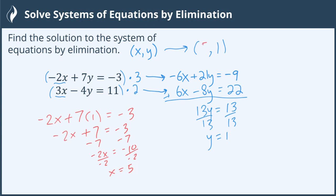So it looks like my x coordinate is a 5. So my answer to the system of equations is 5 comma 1. So if I were to plug in a 5 for x and a 1 for y, that would satisfy both of those equations.